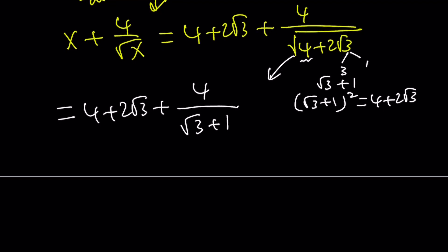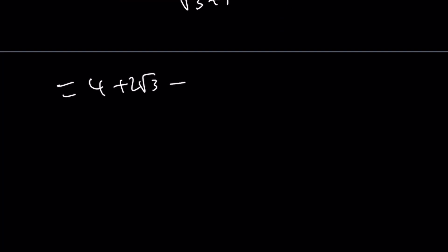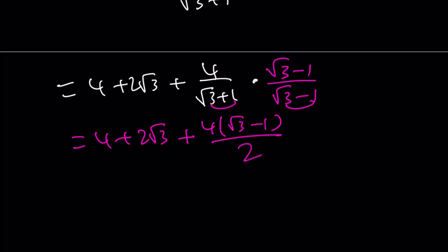Let's go ahead and simplify this by using conjugates. Multiply this by root 3 minus 1 and root 3 minus 1. When you do that, you're going to get 4 plus 2 root 3 plus 4 times root 3 minus 1. Don't distribute it because it's going to simplify. This times that is, from difference of two squares, 2. 2 goes into 4 two times. So this gives us 4 plus 2 root 3 plus, if you distribute the 2, 2 root 3 minus 2. And 4 minus 2 becomes 2, and then we get 2 plus 4 root 3 as the answer.